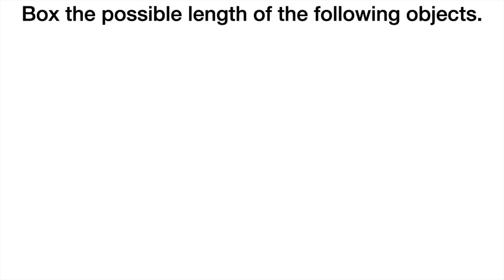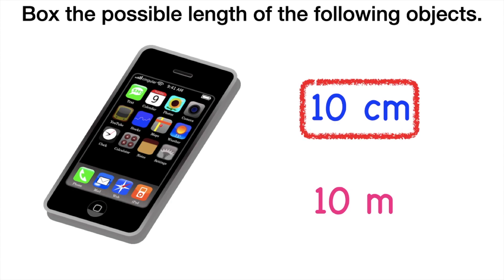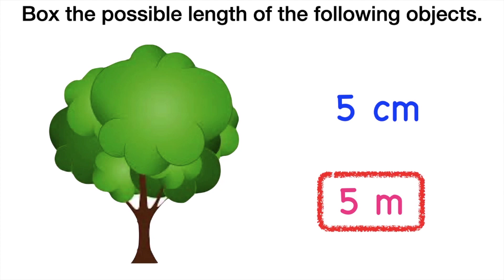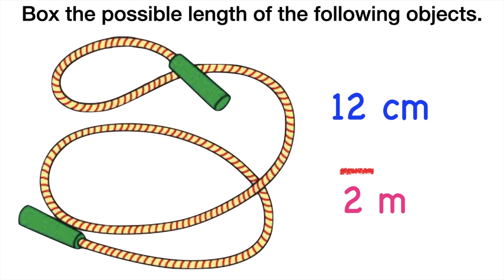Help me box the possible length of the following objects. Are you ready? Let's start. Look at the cell phone. How about this one? The length of a jumping rope — good job, it's 2 meters.